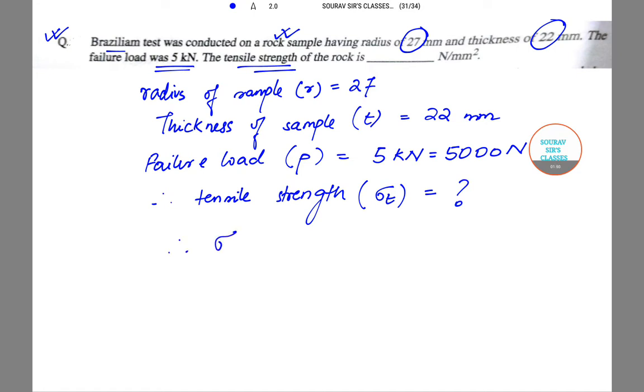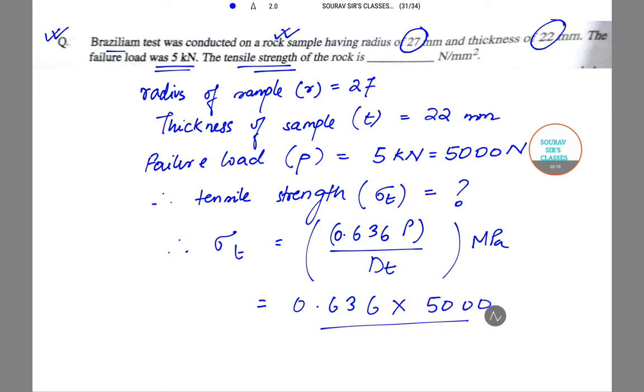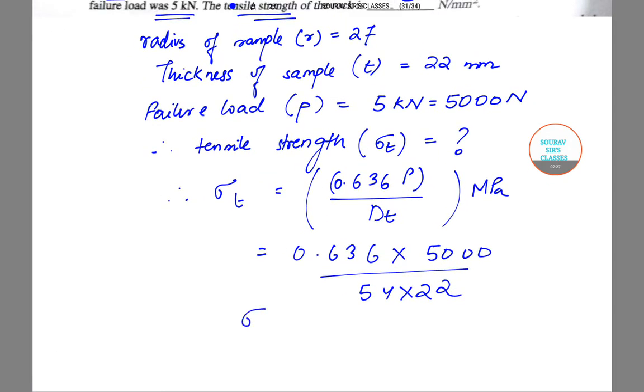The tensile strength is given by 0.636P divided by dt. This equals 0.636 times 5000 divided by 54 times 22. This gives us 2.67 MPa. The value of d becomes 2r, which equals 2 times 27, which is 54 mm.